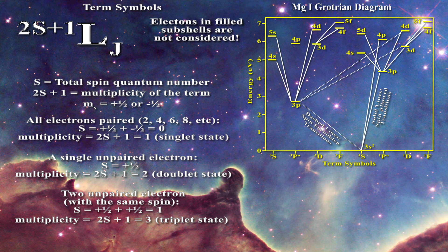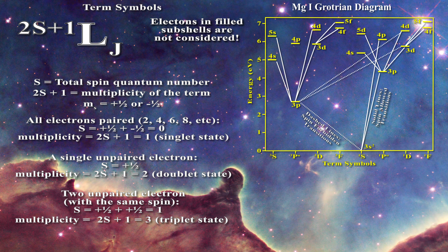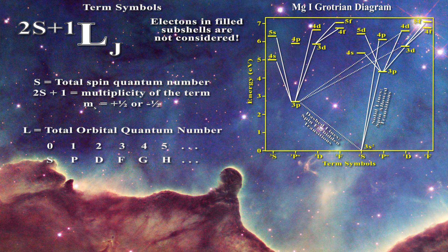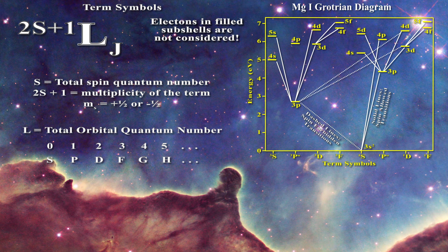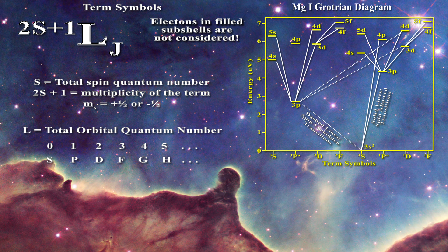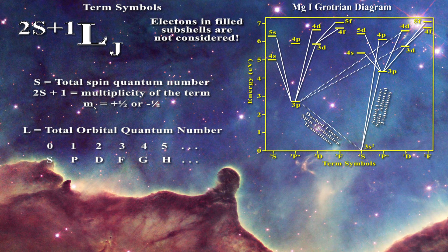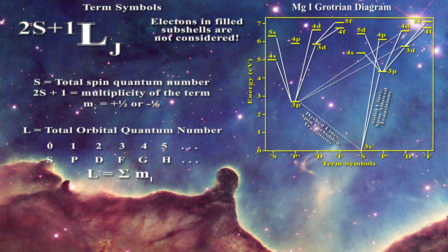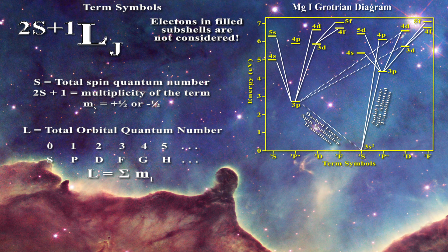The total orbital quantum number, temporarily represented by the letter L, can take on various letter designations associated with possible values of the total orbital quantum number. To determine L, just look at how electrons are placed in the outer orbitals — those orbitals are characterized by magnetic quantum numbers. One simply takes the sum of the magnetic quantum numbers for all the electrons occupying outer shells, irrespective of whether the electron spin is up or down. If an orbital contains two electrons, then two times the magnetic quantum number for that orbital must be counted.